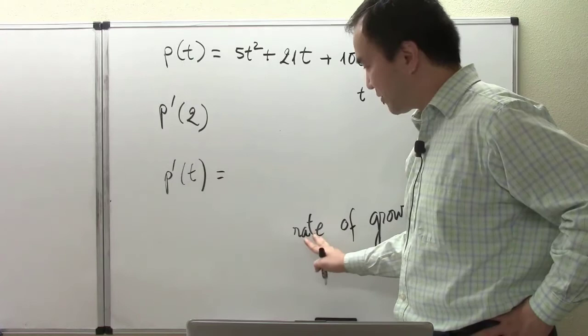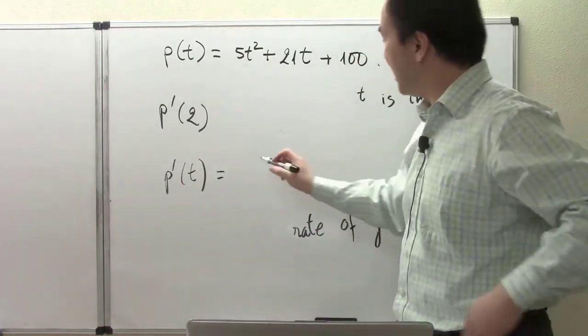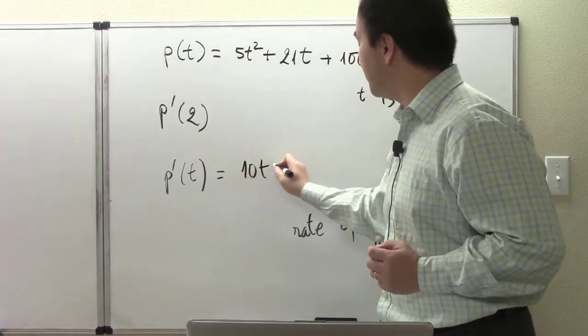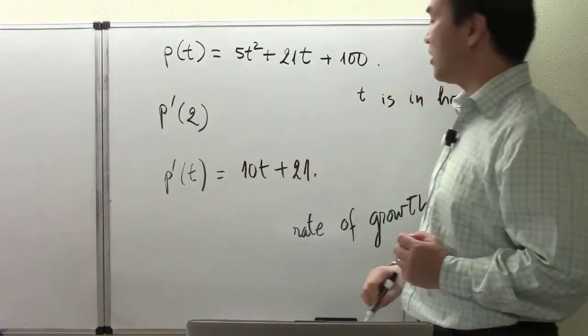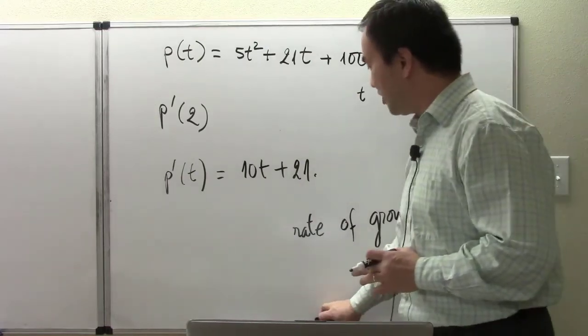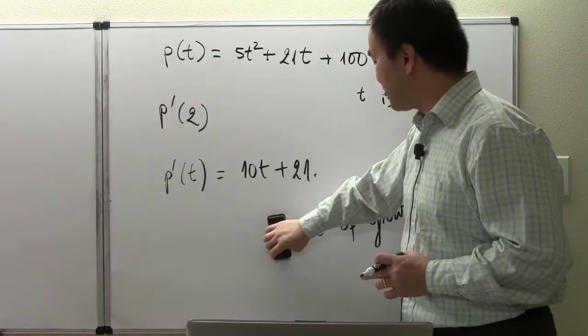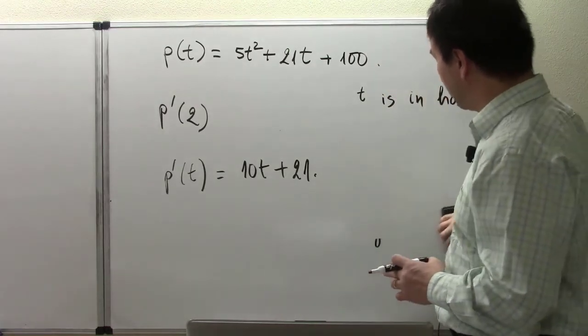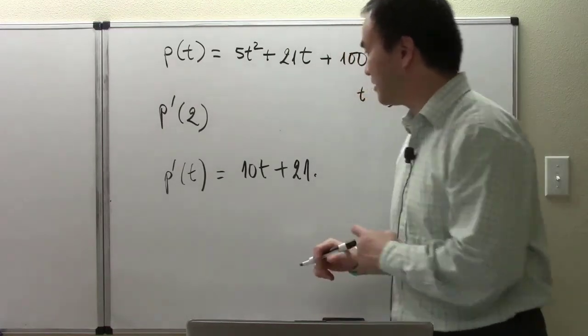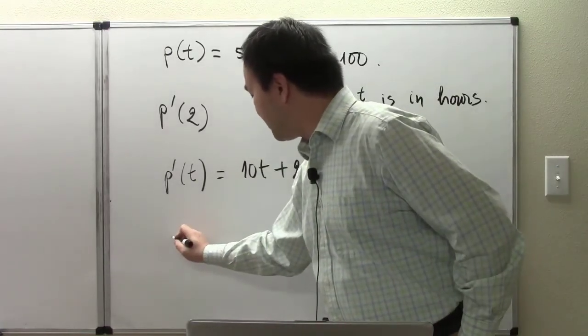In the end, this rate here is the instantaneous rate, or in other words, the derivative of our modeling function. I'm looking at 10t plus 21, and that is our derivative. Once we've found the derivative of our modeling function, which represents the general growth rate of our bacterial colony population...